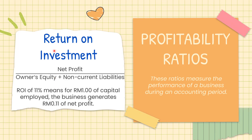Lastly under profitability ratios is return on investment (ROI). As the owner of the business, we want to know: for every one ringgit invested in the company, what is the return? The formula is net profit divided by owner's equity plus non-current liabilities. An ROI of 11% means for every one ringgit of capital employed, the business generates 11 cents of net profit.